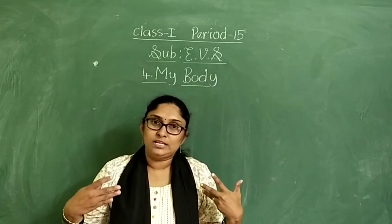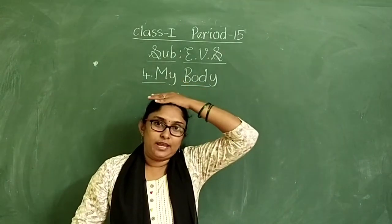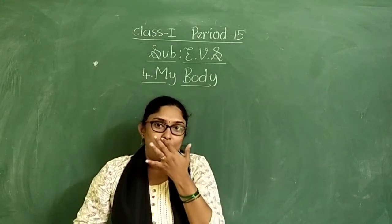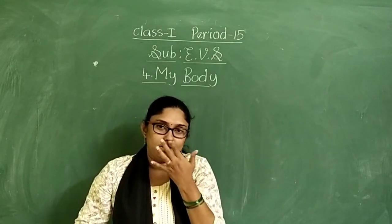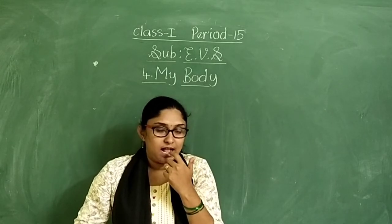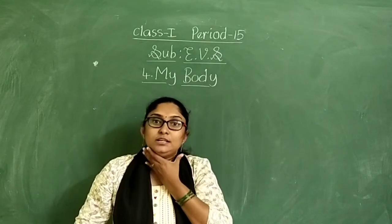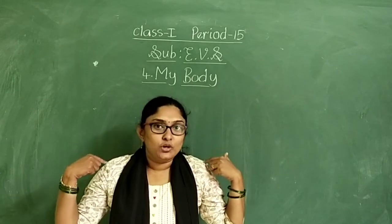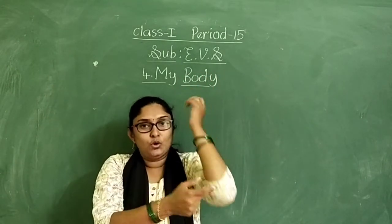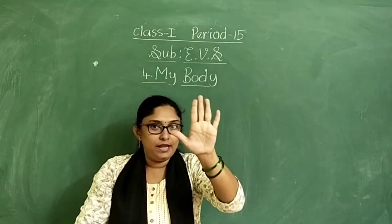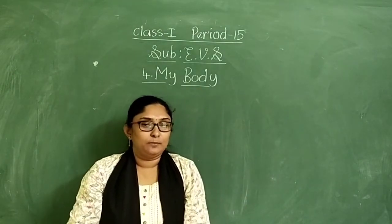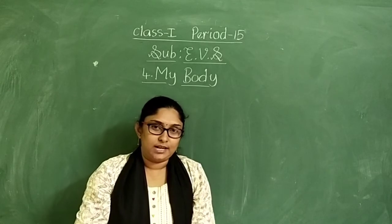What are the parts we learned? Head, forehead, eyes, nose, mouth, teeth, tongue, ears, neck, shoulders, arms, elbow, hand, fingers. These are the parts we discussed in the earlier class.